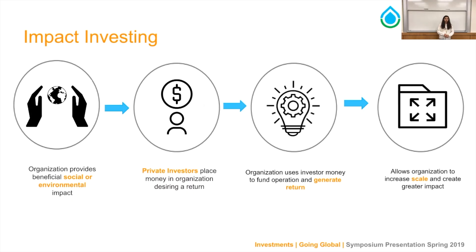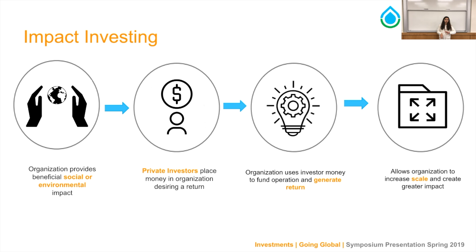An overview of impact investing: we're talking about partnering with organizations that want to provide social benefits, linking them with private investors that want to generate returns creating positive social impact, and then increase scale. As Aguaclara does, we would like to continue building more plants. Right now we're at the stage of connecting communities in Honduras with investors who want to support the mission to bring clean water to these areas of the world.